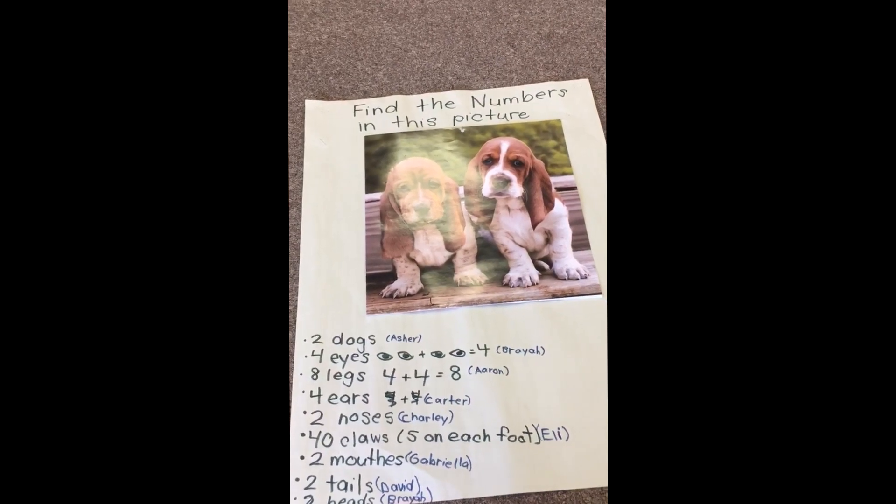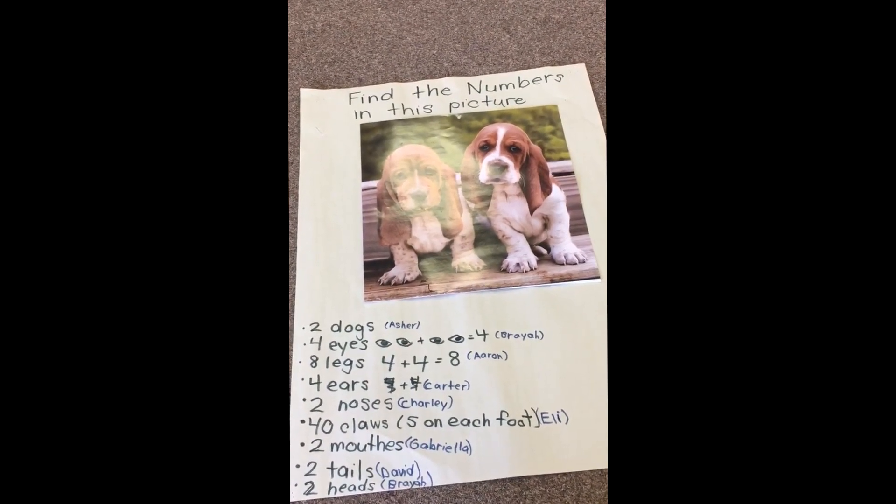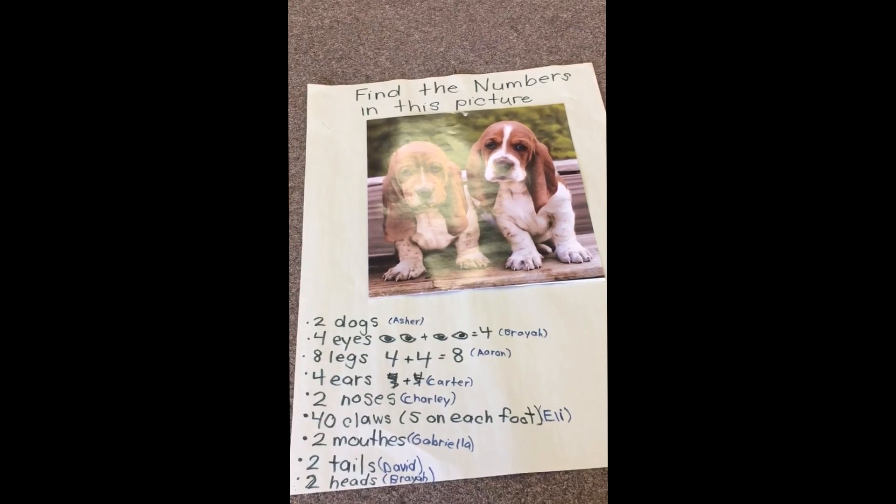I'll show you some other photographs of how my colleague and I have continued with this number talk, including the final one. This was one of our final examples where we actually had the kids come up and we just put up the picture and let them record their numbers and their thinking. There's one upside down. There's no man in this picture, and that was one of the highlights of this number talk. Take a look — 20 eyes.